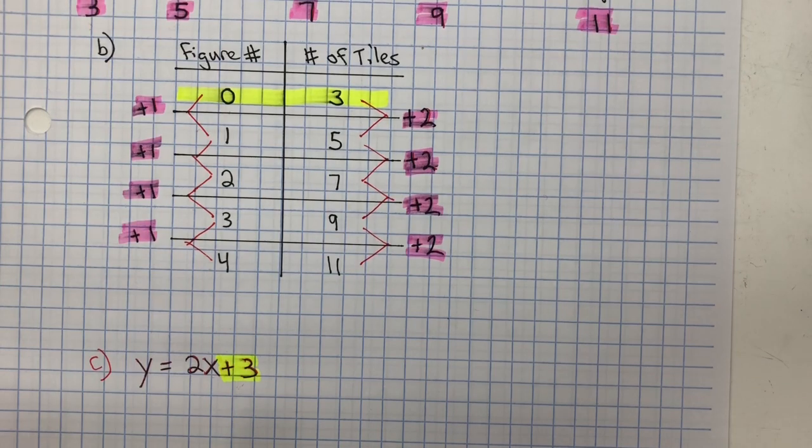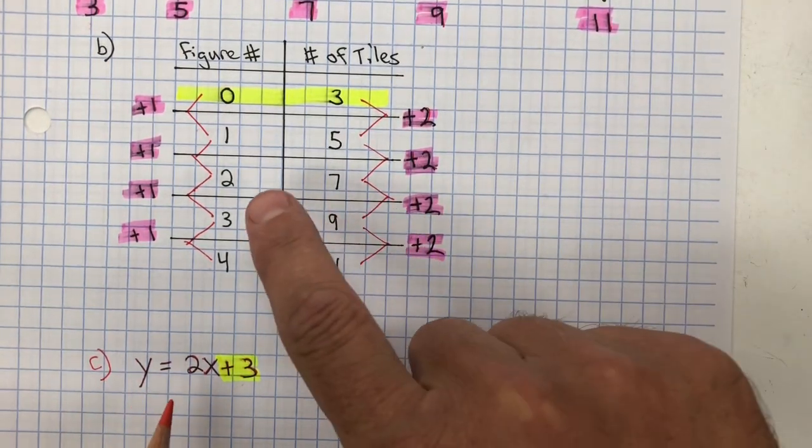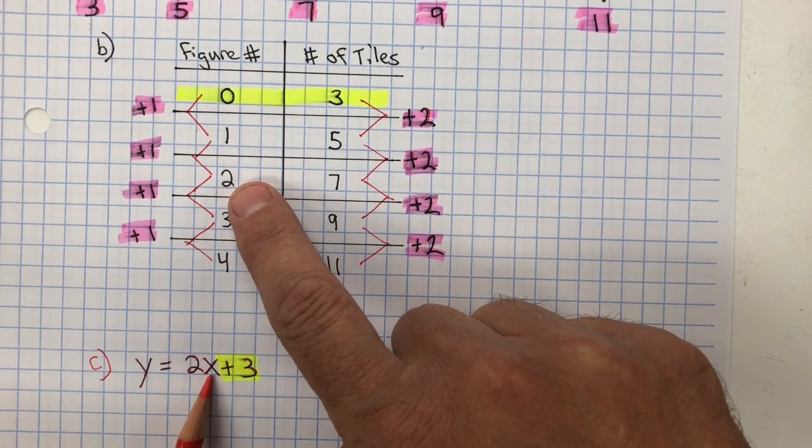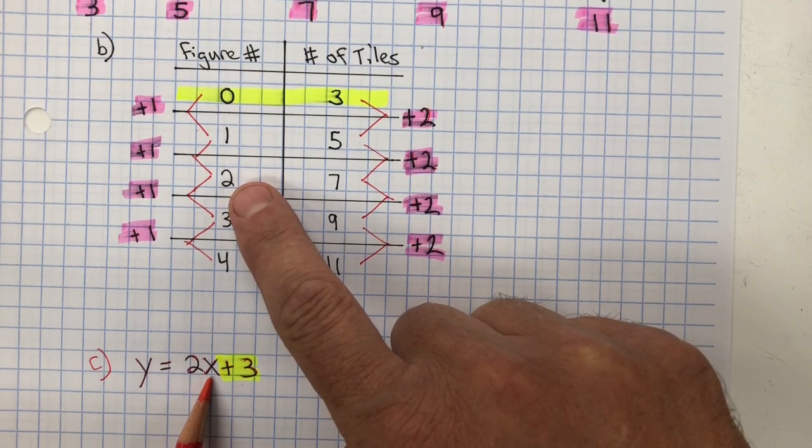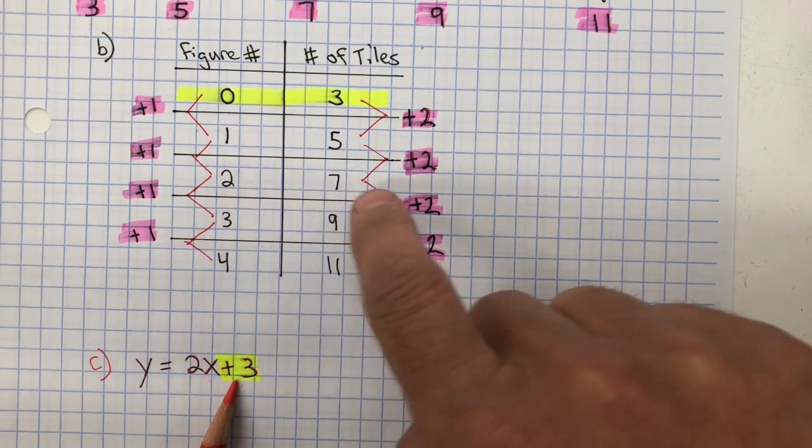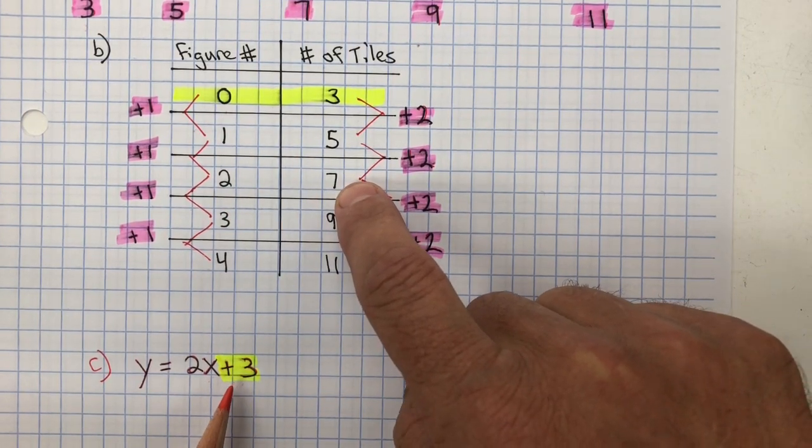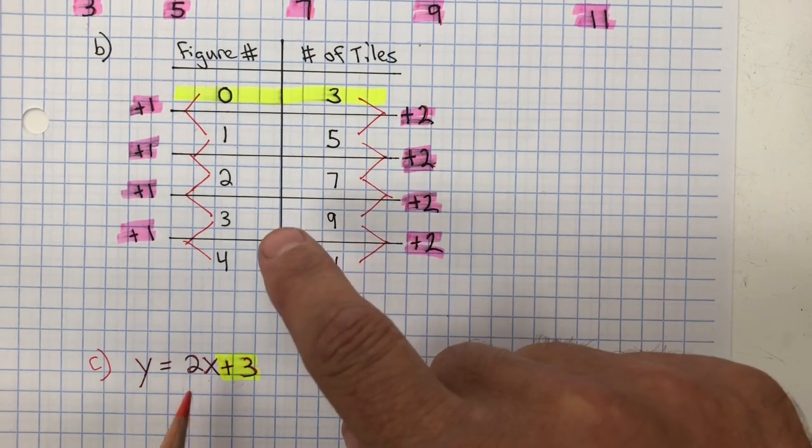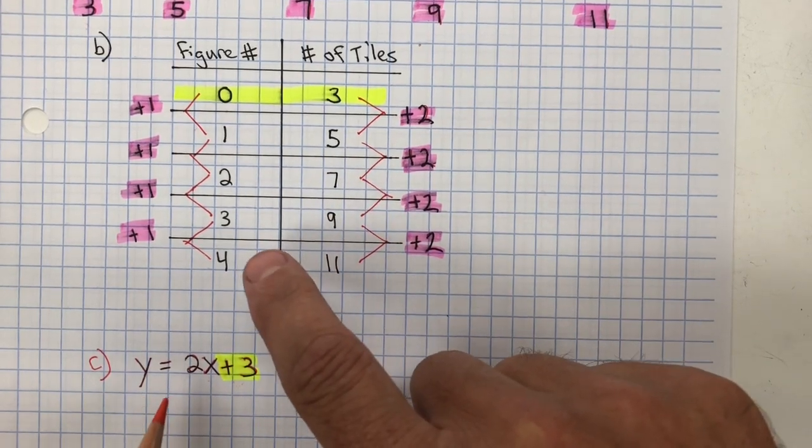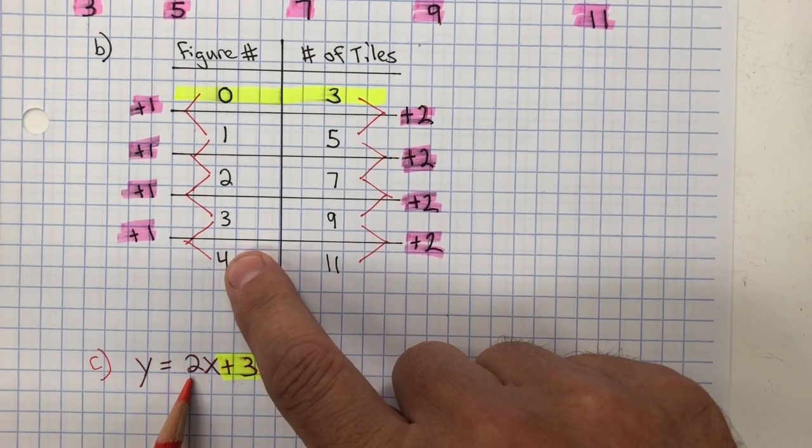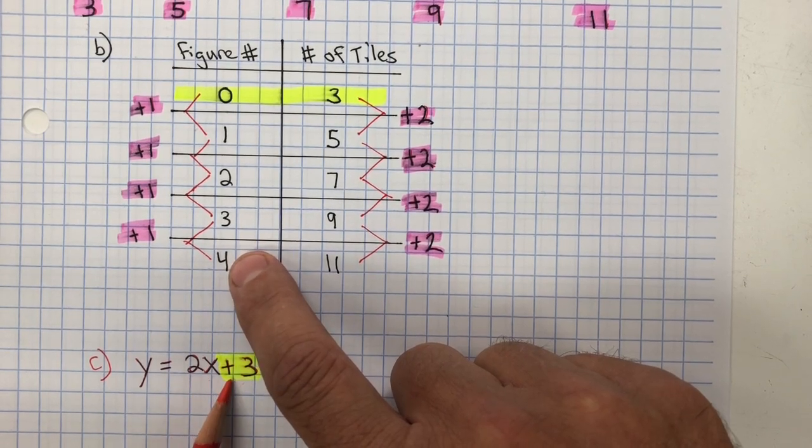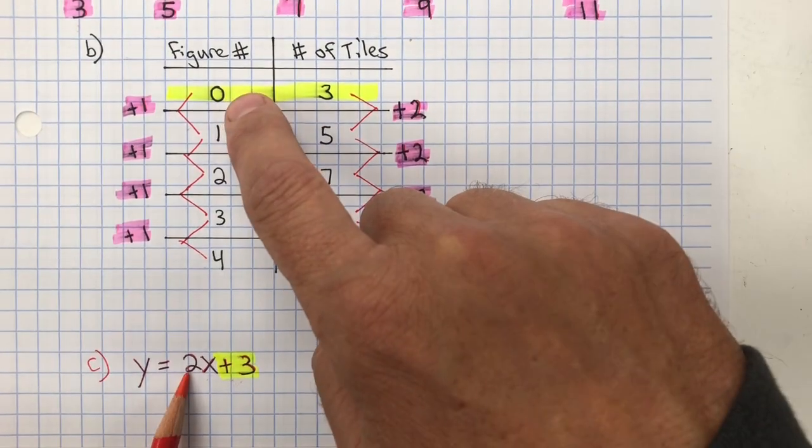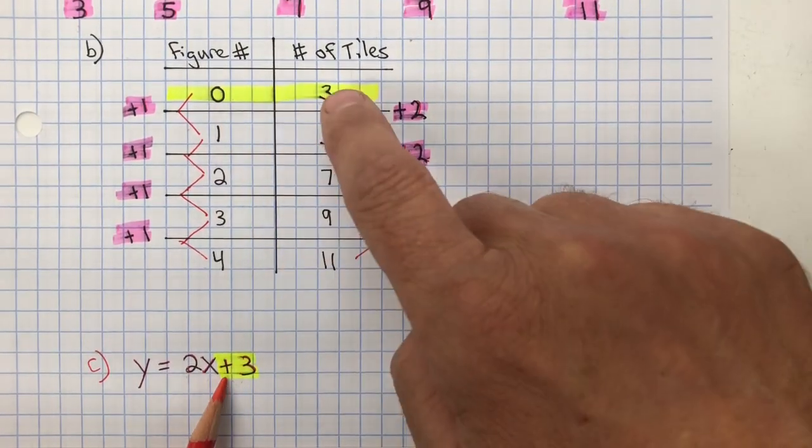And I can check to make sure that this is correct. For example, for figure 2, x is 2. So 2 multiplied by 2 is 4, plus 3 is 7. Now just because it works for 1 doesn't mean that's going to work for all values, so you want to check multiple. 2 multiplied by 4 is 8, plus 3 is 11. It works again. 2 multiplied by 0 is 0, plus 3 is 3.